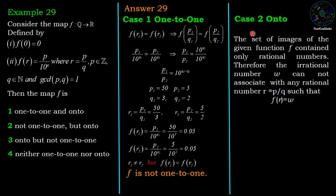Case 2, onto: The set of images of the given function F contains only rational numbers. Therefore the irrational number w cannot associate with any rational number r = p/q such that F(r) = w.